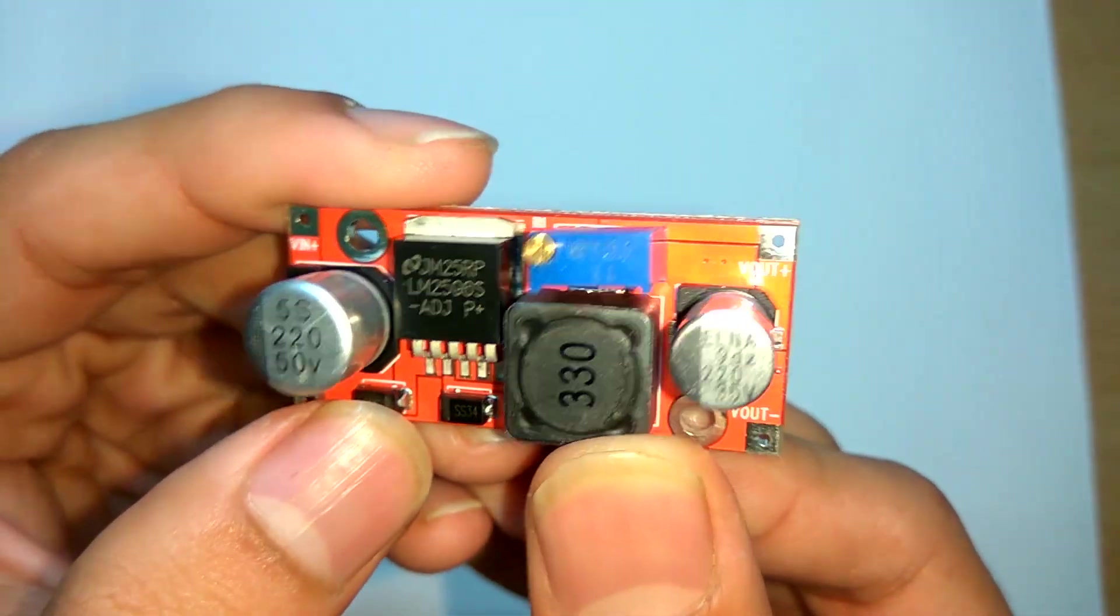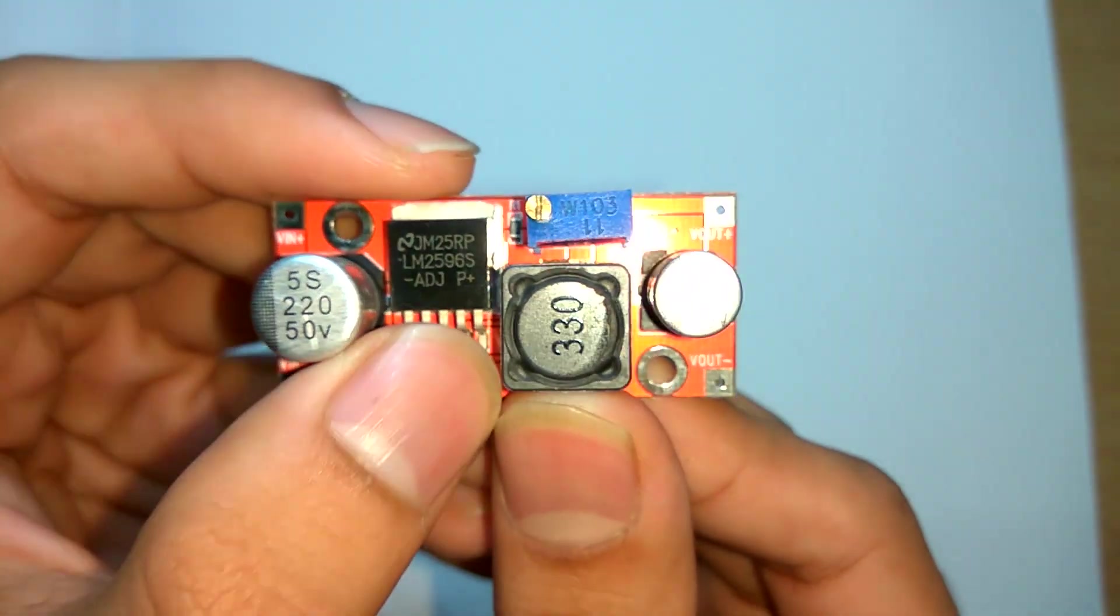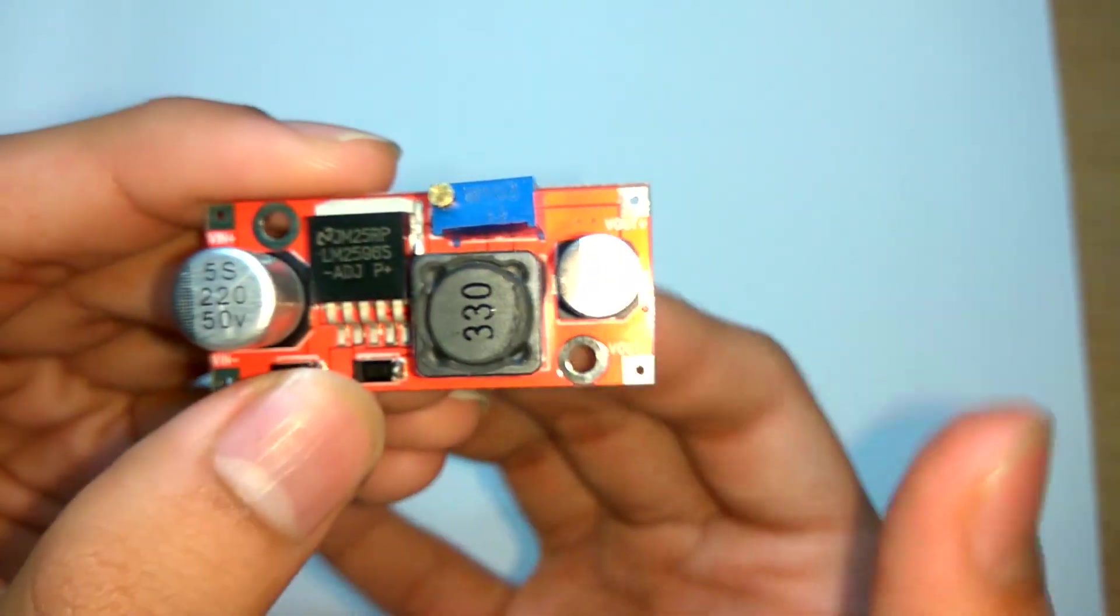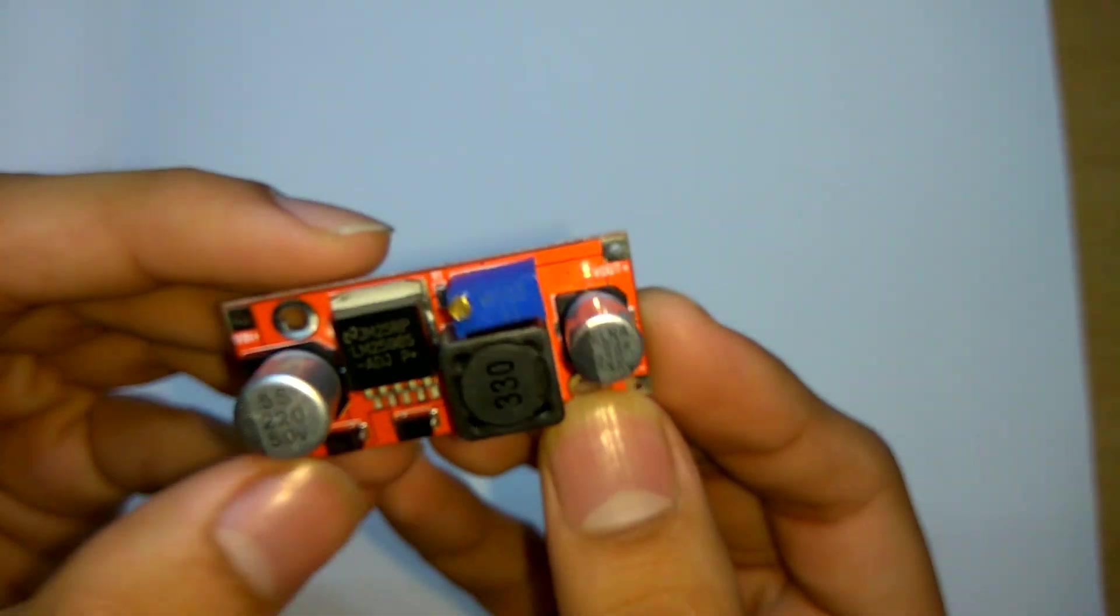You may take a closer look at this buck converter if you haven't till now. So we are going to study this IC and then we might probably reverse engineer or find a circuit diagram of this type of power converter later.